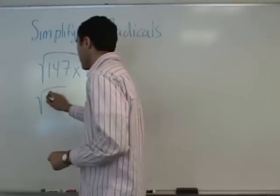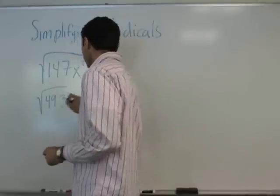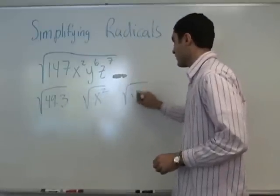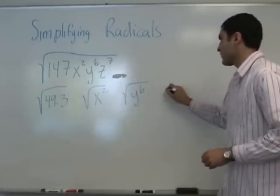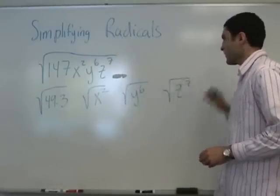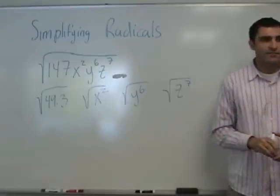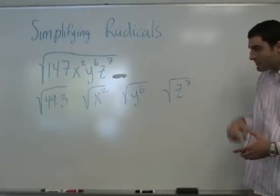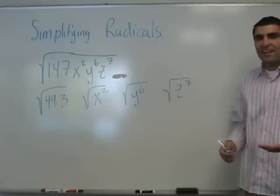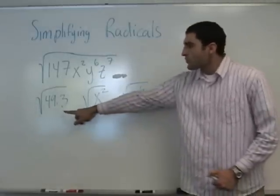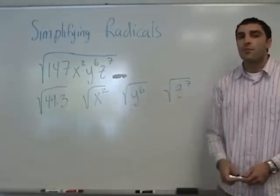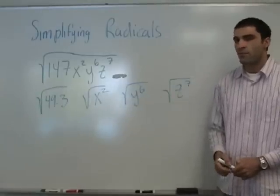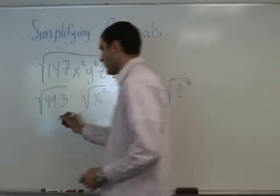Let's do it like this. We did a little splitteroni — it's my favorite pasta. So, 49 times 3. What's the square root of 49? 7. So can we write 7 root 3? Yeah. 7 root 3.